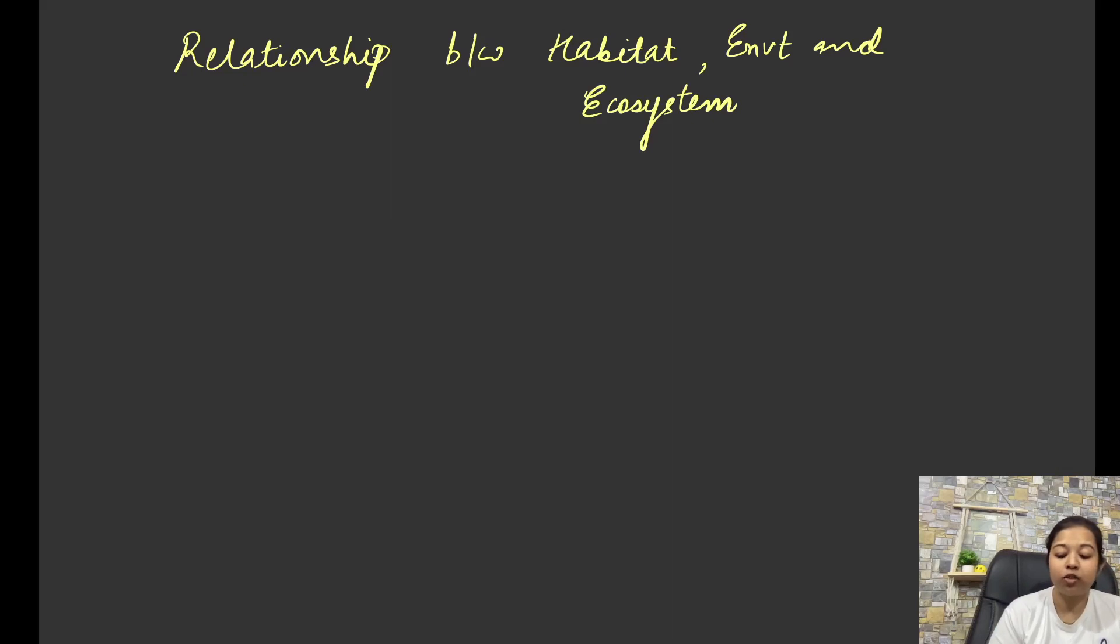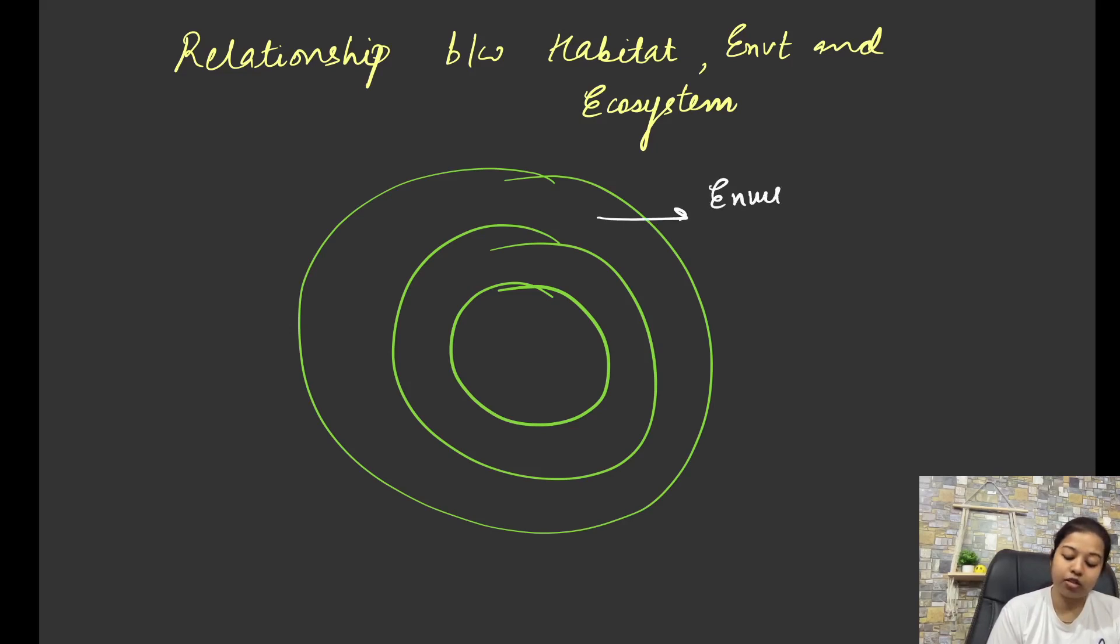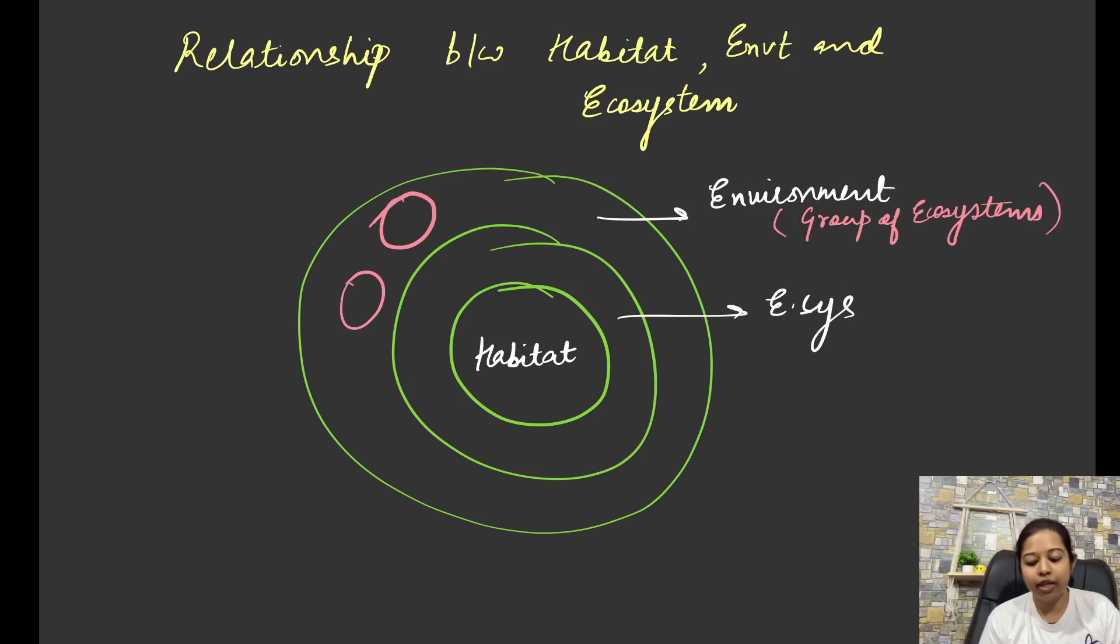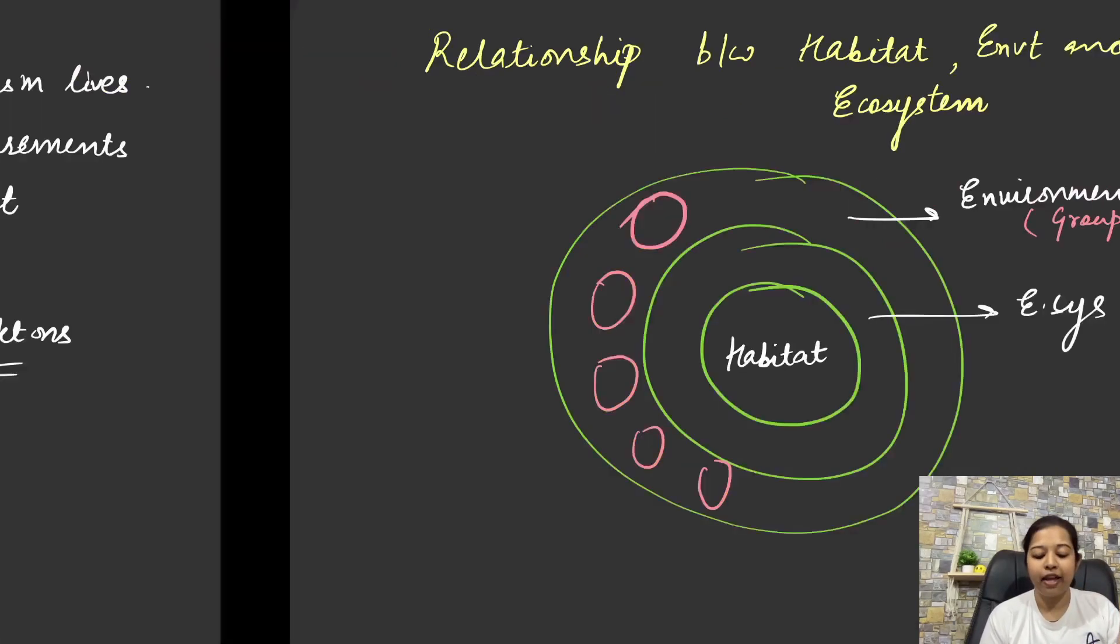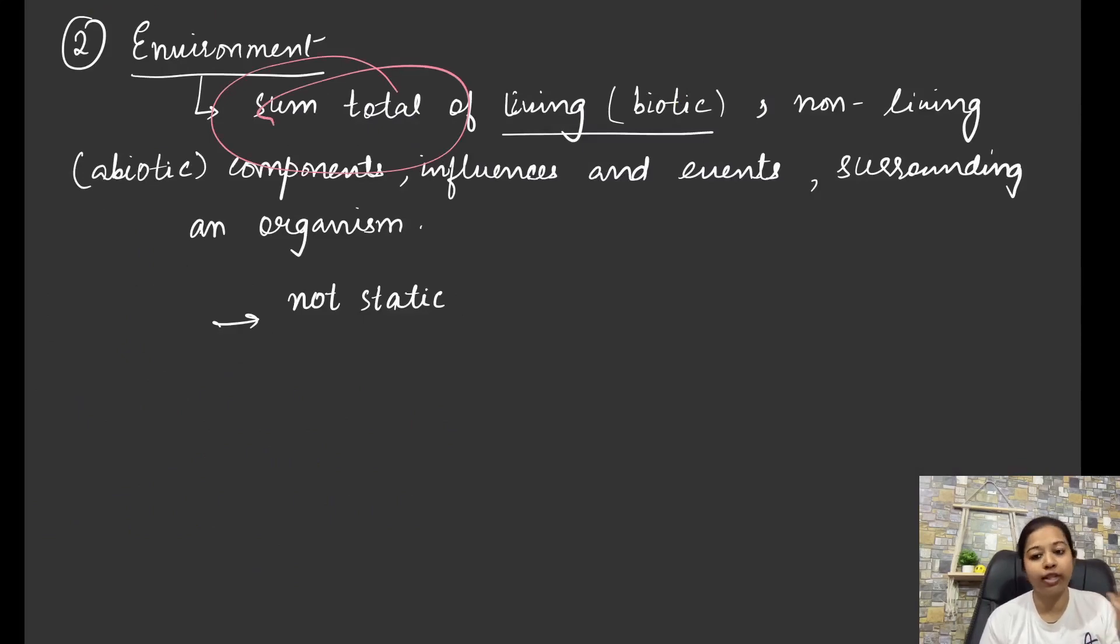But to understand these three, this concept would be important. For example, if we just have something like this. So here you can consider it to be environment. This you can consider to be your ecosystem. And this you can call to be your habitat. So we can actually say that environment is group of ecosystems. Because multiple ecosystems could be here. Where your terrestrial land one can be there. Water one can be there. Artificial, natural. Anything can be there. All of these kind of ecosystems can be there. And all of that will encompass environment. So environment is the broadest possible term that we understand. And we have seen in the definition that it is the sum total. So it is in totality only.